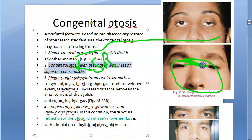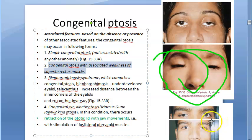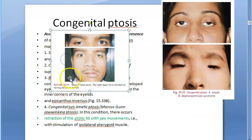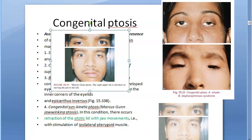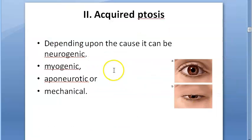Blepharophimosis syndrome involves increased telecanthus — greater distance between the inner corners of the eyelids — and epicanthus inversus. There is also congenital synkinetic ptosis, known as Marcus Gunn jaw-winking ptosis, where the ptotic lid retracts when the person moves the jaw, due to stimulation of the pterygoid muscle. That concludes the congenital ptosis review.